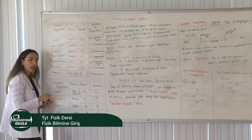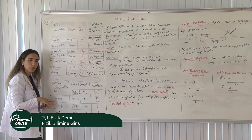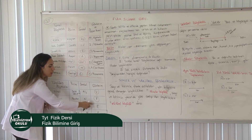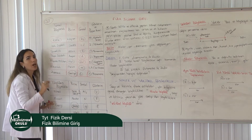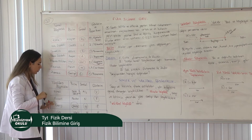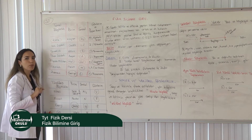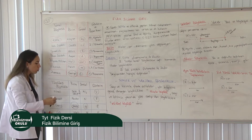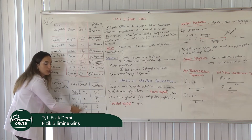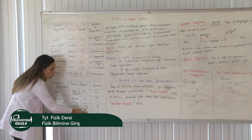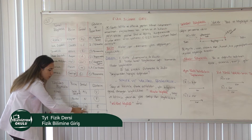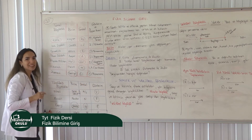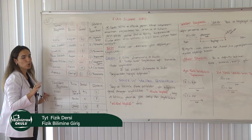Enerji de türetilmiş bir büyüklüktür. Birimi Joule'dür, J ile gösterilir. Enerjiyi büyük E harfi ile kitaplarda tanıyoruz. Güç de türetilmiş bir büyüklüktür; birimi Watt'tır, W ile gösterilir. Kitaplarda gücü P harfi ile tanıyoruz.